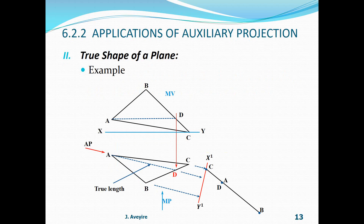True shape of a plane example: going back to the previous example where we determined the edge view, we can now go further to obtain the true shape of our triangle. Note that neither the front view nor the top view is the true shape of the triangular plane. To obtain the true shape we must project perpendicular to the edge view. We call this the second auxiliary projection, because that edge view was obtained by the first auxiliary projection.